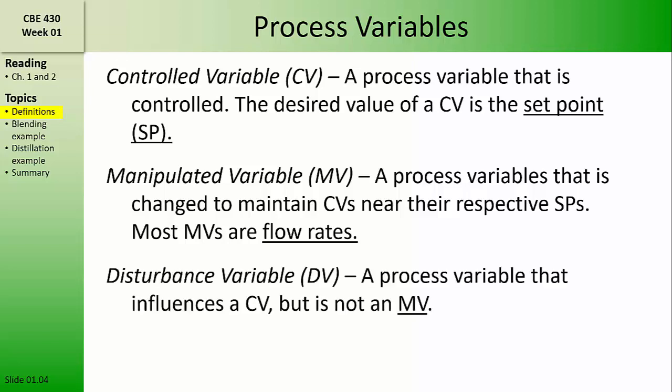A disturbance variable is any process variable that influences a controlled variable, but is not a manipulated variable. When describing process control schemes, it's important for us to be able to identify the controlled, manipulated, and disturbance variables. While in a particular unit operation, a disturbance variable cannot by definition also be a manipulated variable.